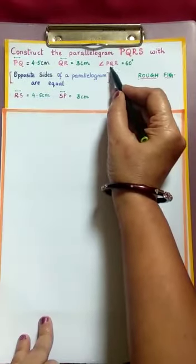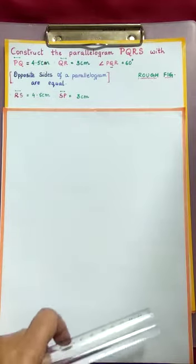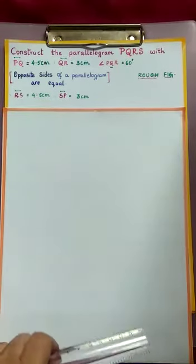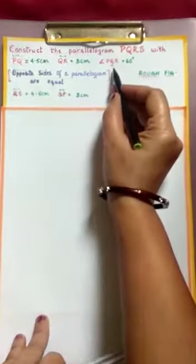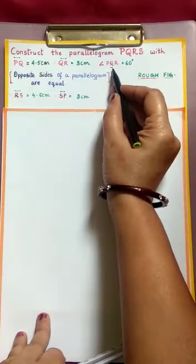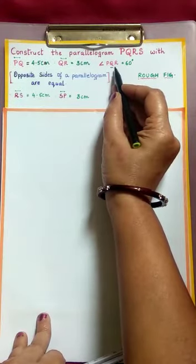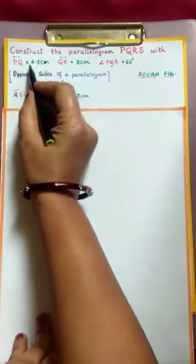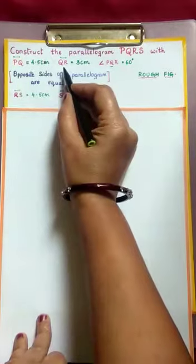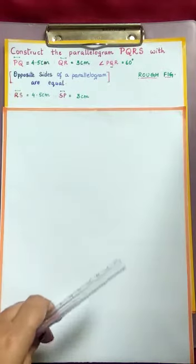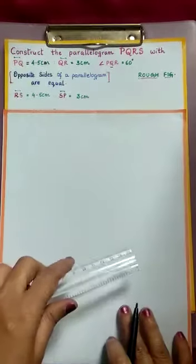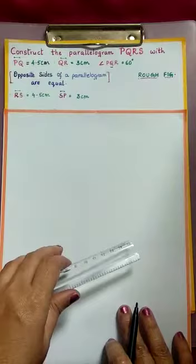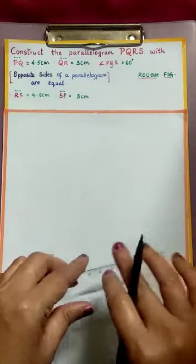Here the measure of angle Q is given as 60 degrees. We know that we have to take the base which includes this angle. Q is present in both PQ line segment and QR, so we can take any one as base. Now, let's take PQ as base.